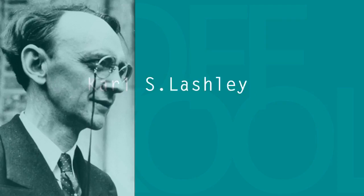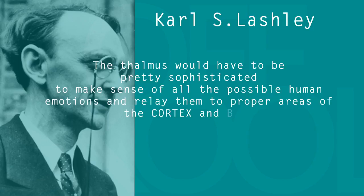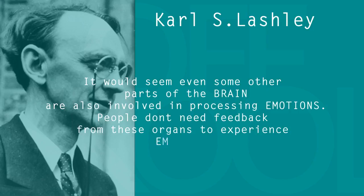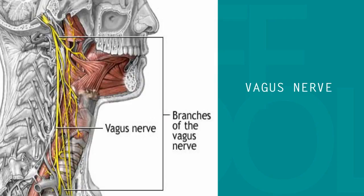This theory has its critics too. Lashley stated that the thalamus would have to be pretty sophisticated to make sense of all the possible human emotions and relate them to proper areas of the cortex and body. It would seem that some other parts of the brain are also involved in processing emotions. People do not need feedback from those organs to experience emotions. However, there is an alternate pathway that carries information from these organs to the cortex — that is the vagus nerve, one of the cranial nerves. This makes this theory a little less convincing.